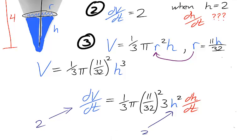And we have exactly enough information to solve this equation by just plugging in 2 for dV/dt and 2 for h. The rate of change for the height is 512 over 121 pi.